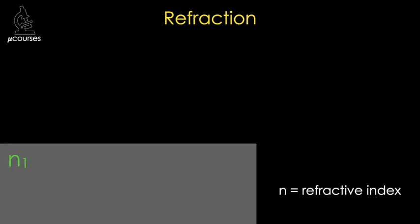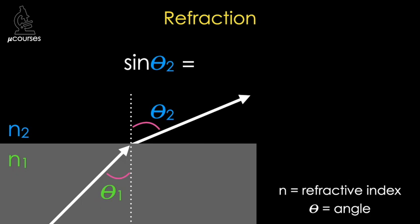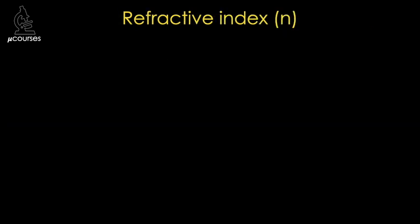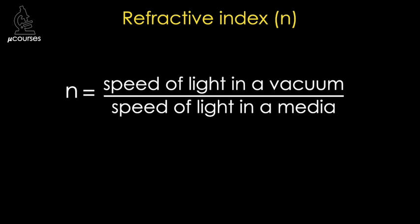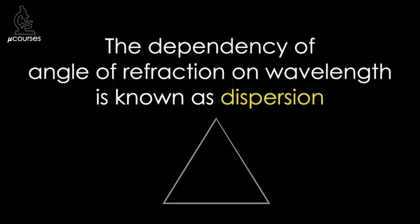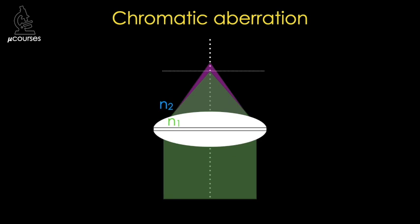To understand why this happens, let's first review refraction and its dependency on wavelength. Consider two media that have different refractive indices, N1 and N2. Refraction occurs to light that is at an oblique angle relative to the perpendicular interface between the two refractive indices, and results in light entering the second media at a different angle. The sine of the angle of refraction is given by N1 divided by N2 times the sine of the angle of light as it approaches the interface — this is known as Snell's law. Refractive index is defined as the speed of light in a vacuum divided by the speed of light in the media, and the speed of light is determined by the frequency times its wavelength. The dependency of refractive index on wavelength is known as dispersion, visualized by sending white light through a prism. Since the angle of refraction depends on wavelength, simple lenses are subject to chromatic aberration.